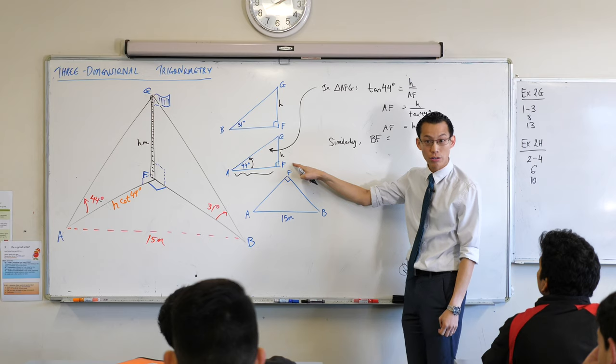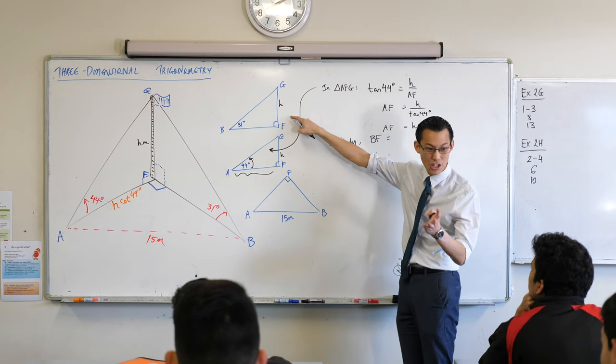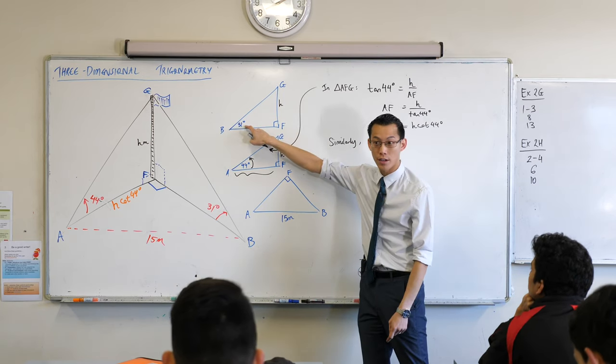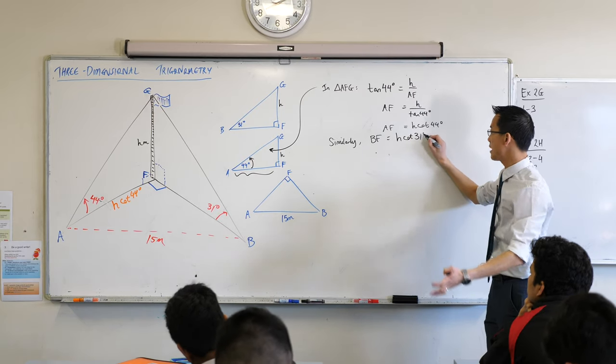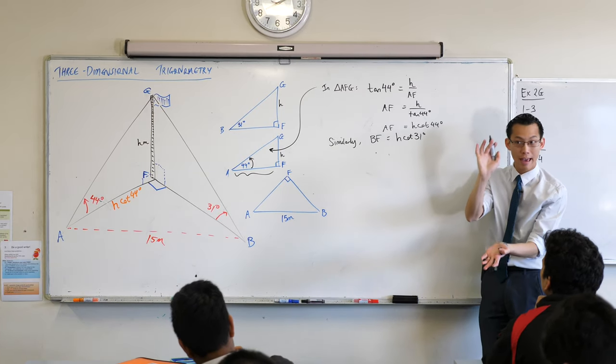From this triangle, this triangle is identical with only one difference—just the angle is different. So it's going to be H cot 31 degrees. Same triangle, just slightly different angle.